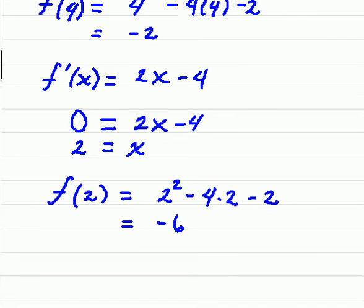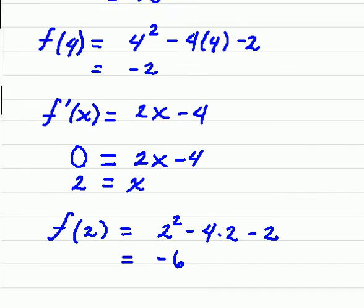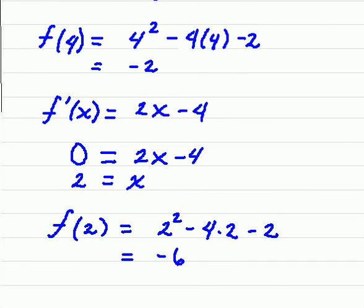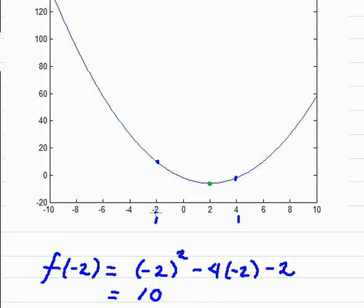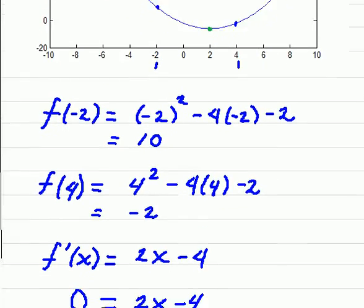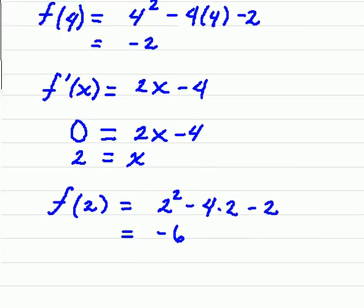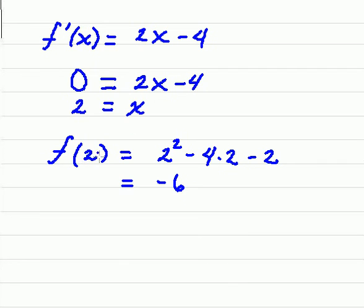One thing to note here: if our critical point, that critical value there, x equals 2, if that's not in our interval between negative 2 and 4, then we just totally disregard it. In other words, we could have possibly gotten some other value outside here. Of course, by looking at this graph, that's not even possible. But we may come upon that in some later problems. So this number here must be in the interval for us to even consider it. And if it's not in the interval, then we don't even consider this.